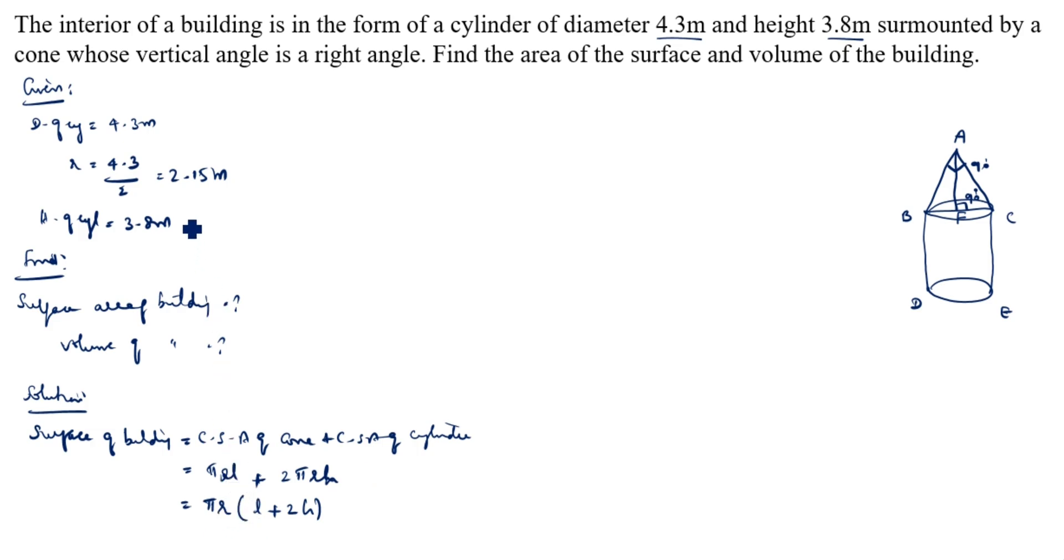Pi R we know: 2.15. L we do not know. L is this L value. We do not know. 2 into H is 3.8. This is H value. The height of the cylinder is 3.8 meter. Diameter of a cylinder is 4.3 meter. Now we will find L value.